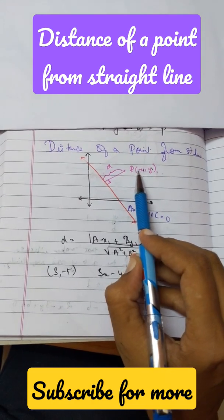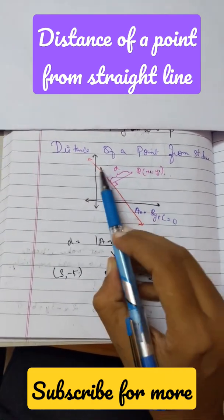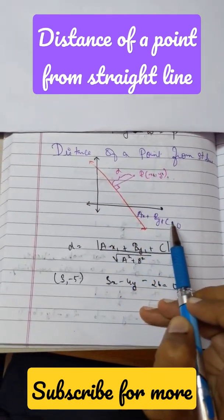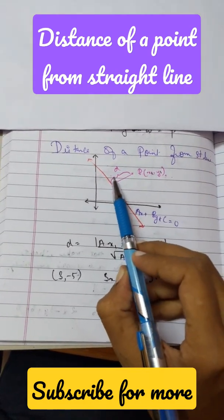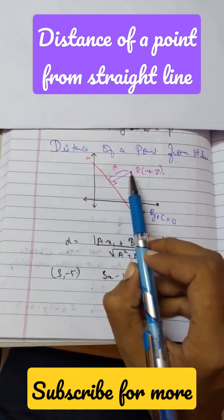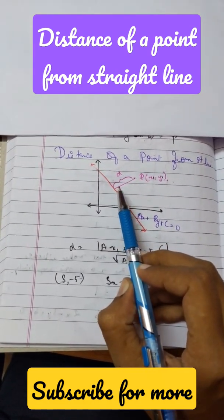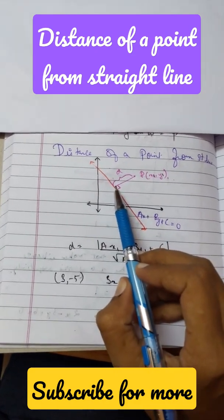For example, if we have this point P and a straight line, then how do we find this distance d, which is nothing but the distance of a perpendicular drawn from this point onto this line.